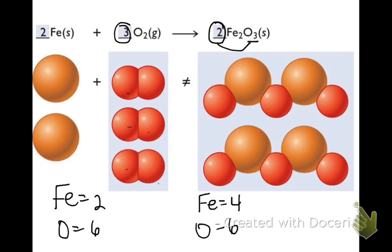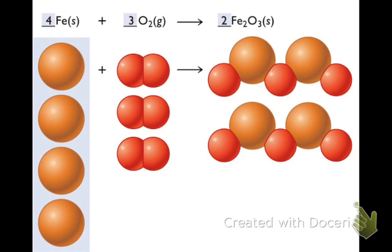To increase the number of irons on the left hand side — I need a total of four — I put a coefficient of 4 in front of iron. Now I have one, two, three, four irons on the left hand side and one, two, three, four irons on the right hand side. And then six oxygens on the left and six oxygens on the right hand side. The equation is now balanced.